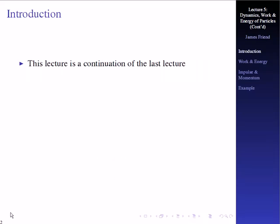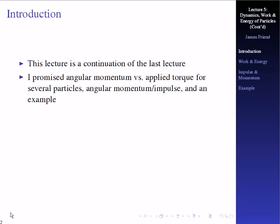This is basically a continuation of the fourth lecture. We talked about having angular momentum versus applied torque for several particles, angular momentum and impulse, and an example. I promised all that in the last lecture but didn't quite deliver it, and this is what we're going to be talking about this time.